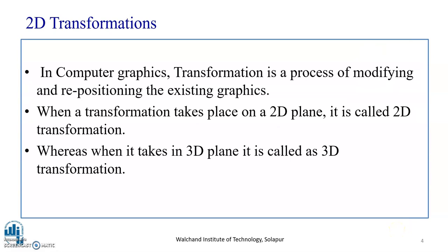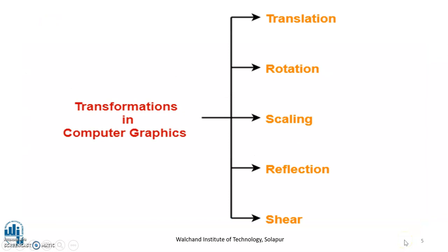Transformation is a process of modifying and repositioning objects in the existing graphic. When the transformation takes place on a 2D plane, it is called 2D transformation, whereas when it takes place in a three-dimensional plane, it is called 3D transformation. Transformations in computer graphics are broadly categorized as translation, rotation, scaling, reflection, and shear.